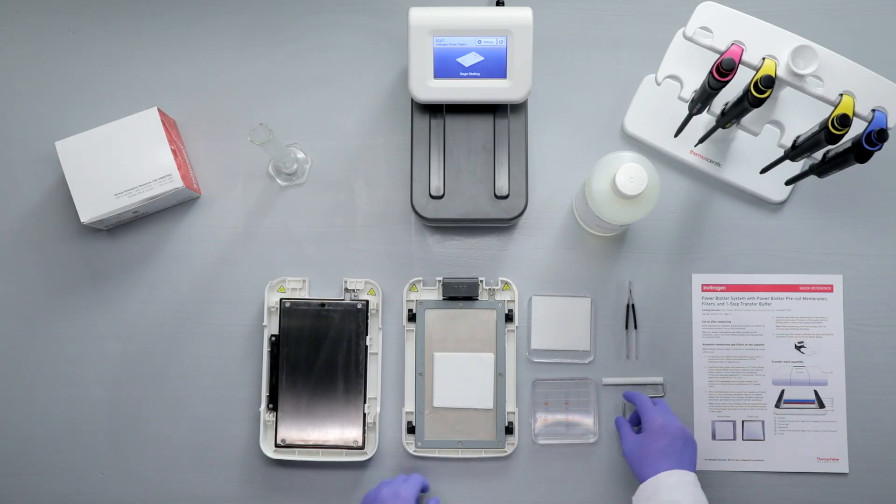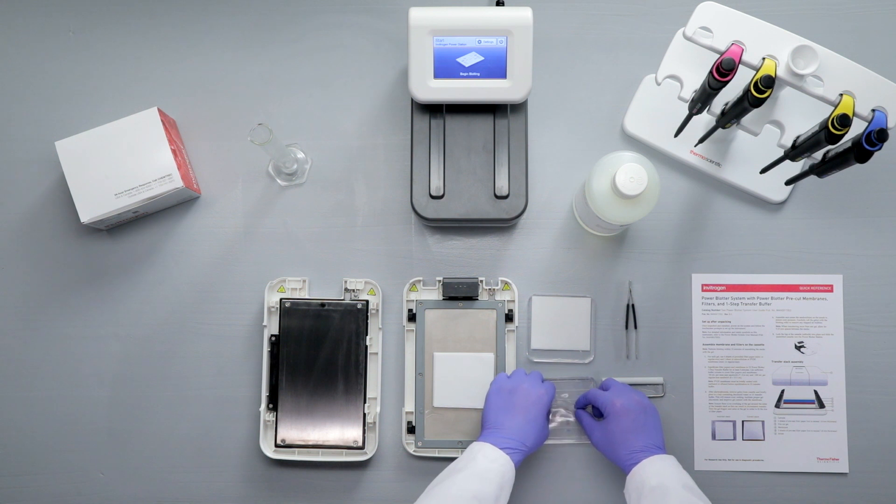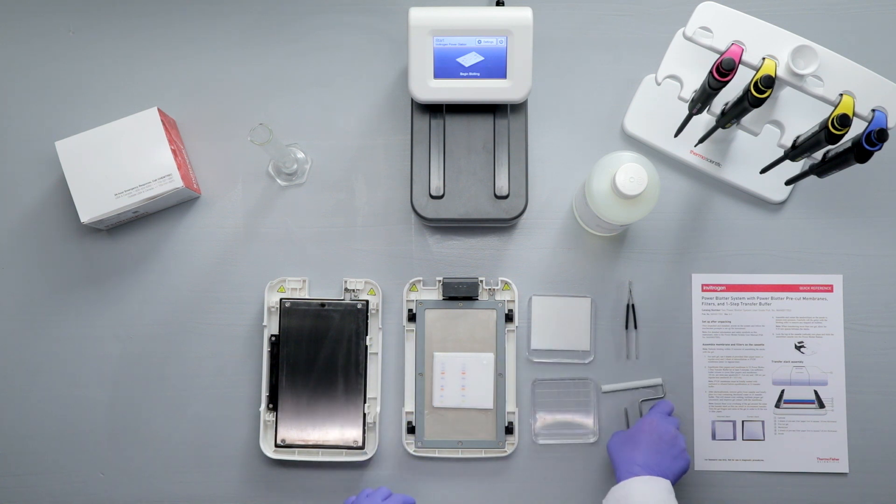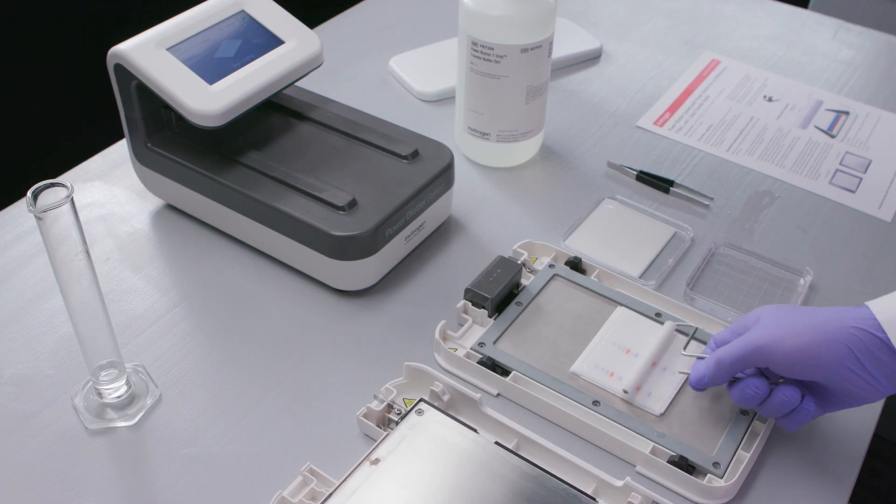Immerse the pre-run gel in deionized water for 5 to 15 seconds. Place the pre-run gel on the transfer membrane. Trim the gel carefully so that no parts of the gel overhang the sides of the stack. Use the roller to remove any air bubbles from between the gel and the membrane.